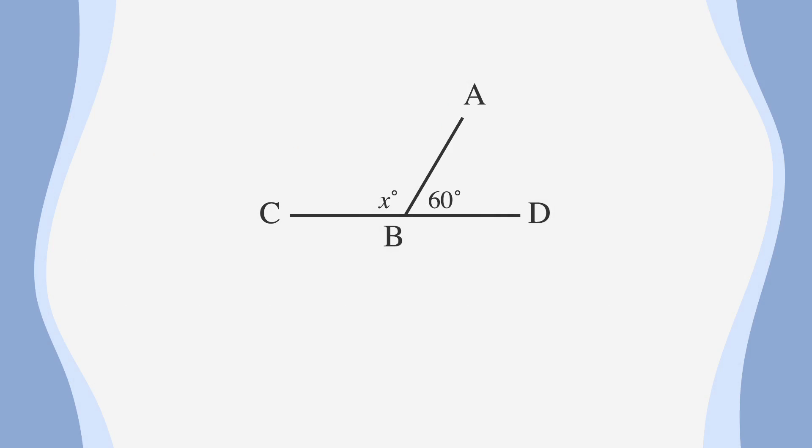In this example, we know that the line CD is 180 degrees because all straight lines are 180 degrees. We're also told that angle ABD is 60 degrees. To find the measure of CBA, we can write the equation x plus 60 equals 180. Then, we can solve for the missing angle by subtracting 60 from both sides. We get x equals 120. So, angle CBA is 120 degrees.